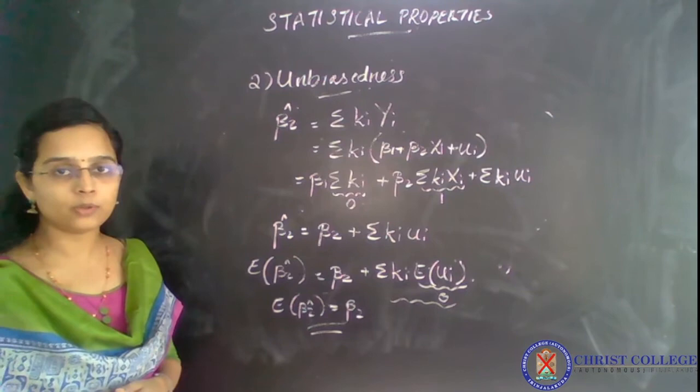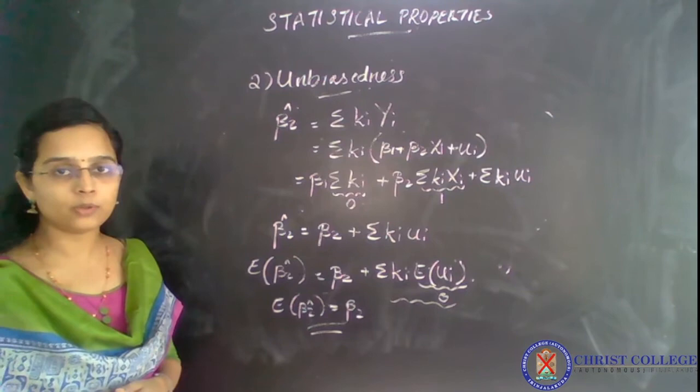Similarly, we can prove the unbiasedness of beta 1 hat as well. This is sufficient for proving this statistical property. Expectation of beta 2 hat is equal to beta 2 — this is the unbiasedness of least square estimators.